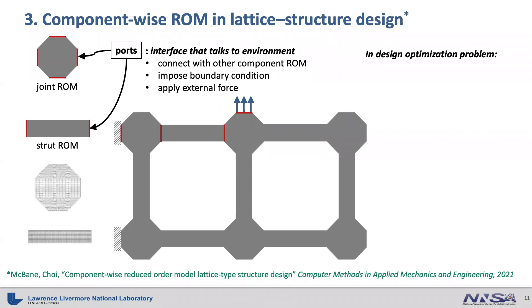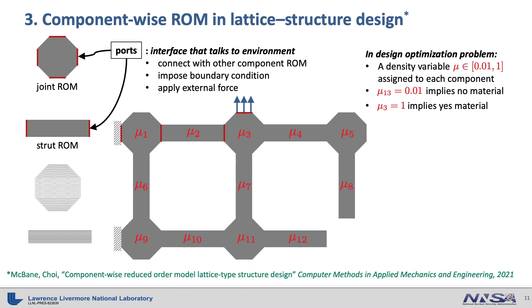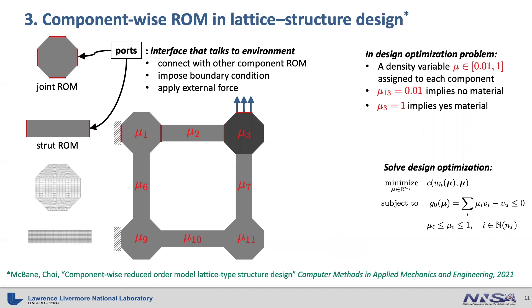Then, in design optimization, we assign a density variable to each component which varies from 0 to 1. Usually, we avoid 0 to ensure well-posedness, so we set our lower bound to be 0.01. A small density variable implies putting no material there. Density of 1 means you put the material there. We automatize this procedure by solving design optimization problem to find an optimal lattice structure, for example, to minimize the compliance of the system.